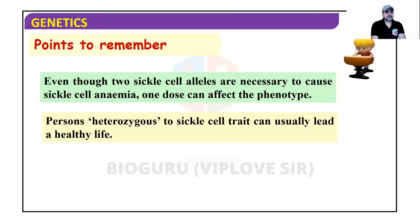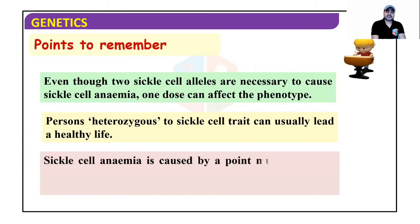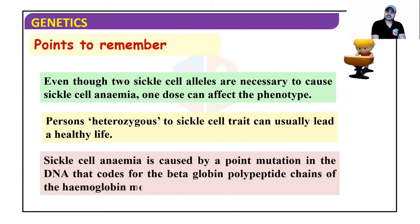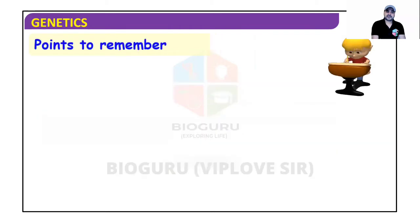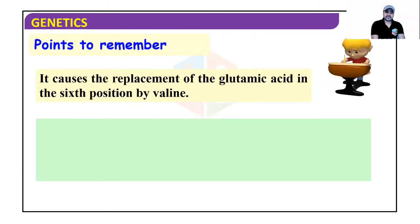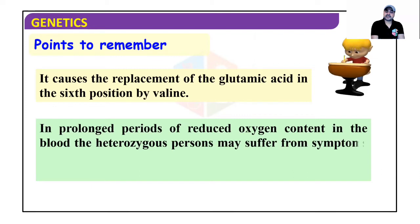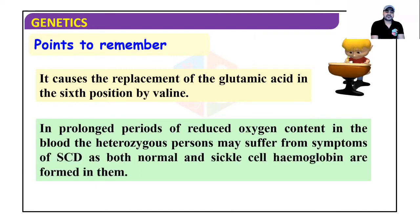Even though two sickle cell alleles are necessary to cause sickle cell anemia, one dose can affect the phenotype. A person heterozygous for sickle cell trait can usually lead a healthy life. Sickle cell anemia is caused by a point mutation in the DNA coding for the beta-globin polypeptide chains of hemoglobin — at the sixth position, glutamic acid is replaced by valine.